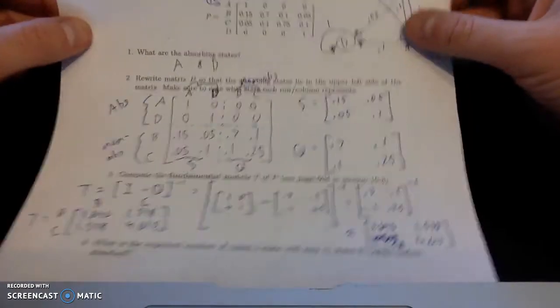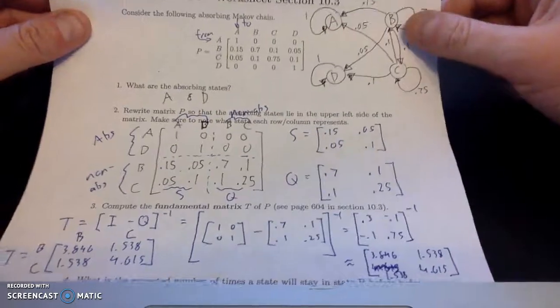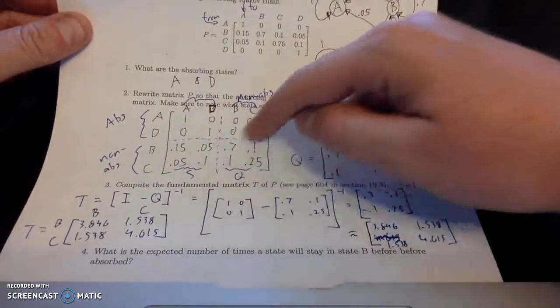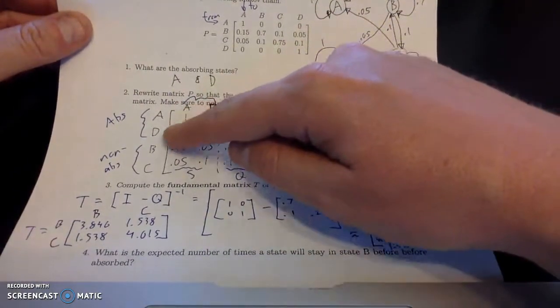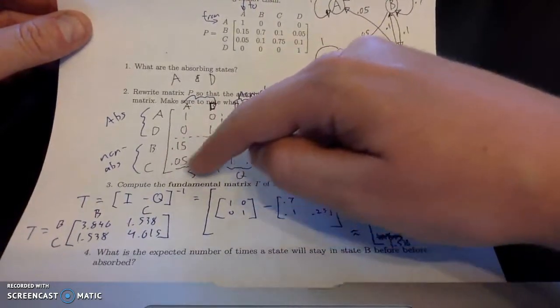And in the last video, we figured out the absorbing states for this Markov chain transition matrix.